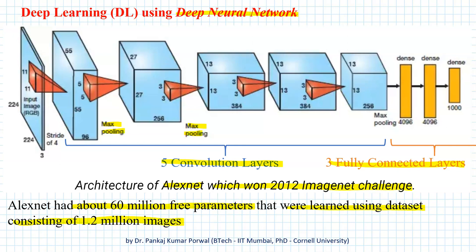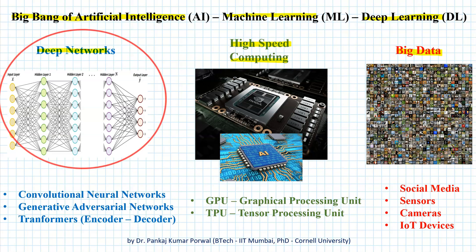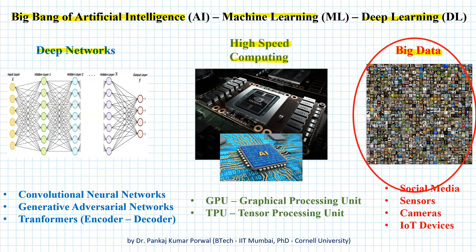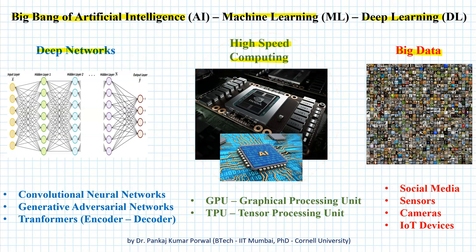Training such large deep networks requires huge computational resources. There are three important developments that led to the big bang of artificial intelligence, machine learning, and deep learning: the development of deep networks, the development of high-speed computing devices, and the availability of big data. The exponential growth in AI is the result of our ability to train deep networks with millions of free parameters using gigabytes to terabytes of data on extremely high-speed computing devices.